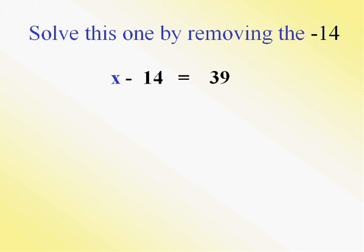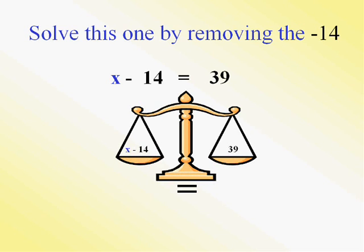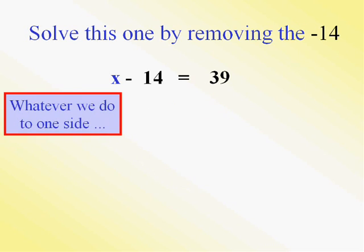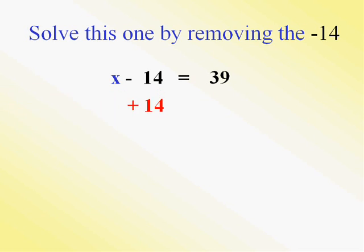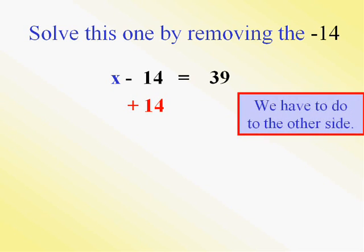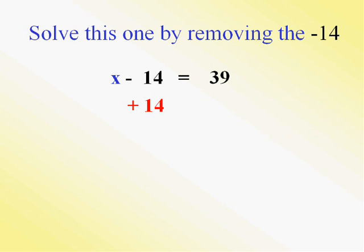Now in this case, we want to get x by itself. Who's keeping it from being by itself is a minus or negative 14. Remember again, whatever you do on the left, you have to do on the right. In this case, the appropriate thing to do on the left to get rid of the negative 14 is to add a 14. Of course, if I do it on the left, I have to do it on the right.